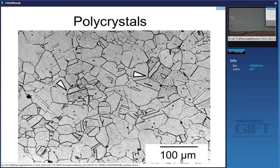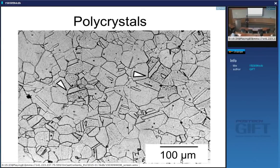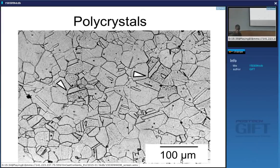A grain of salt might itself be a single crystal. We have crystals with grain boundaries between them. Crystallography is not just about single crystals; we need to understand how crystals of different kinds behave when put together.